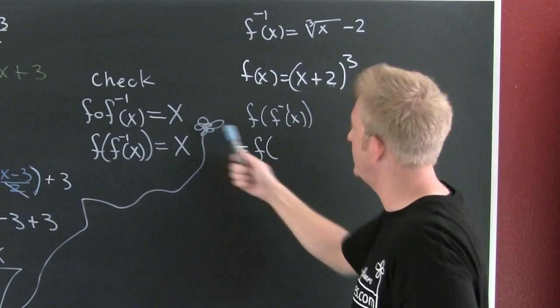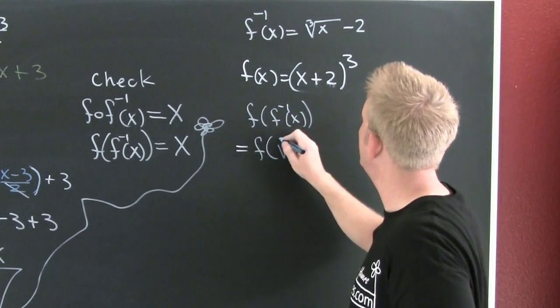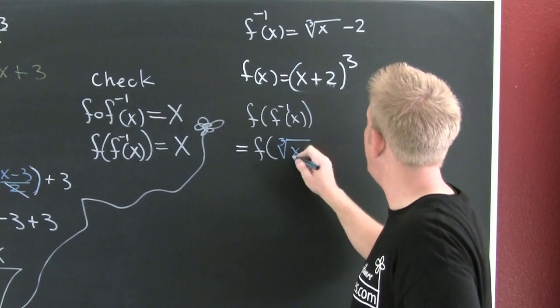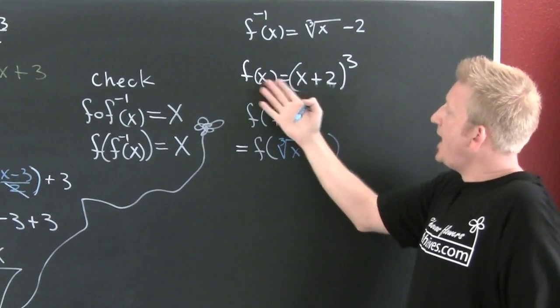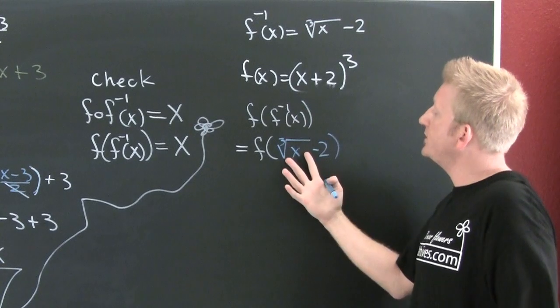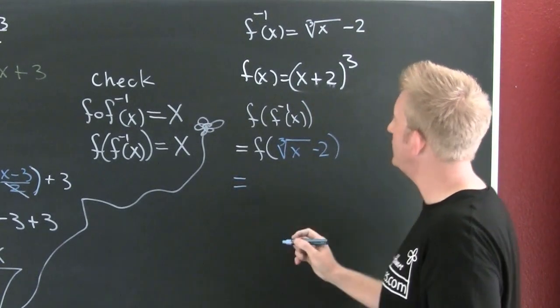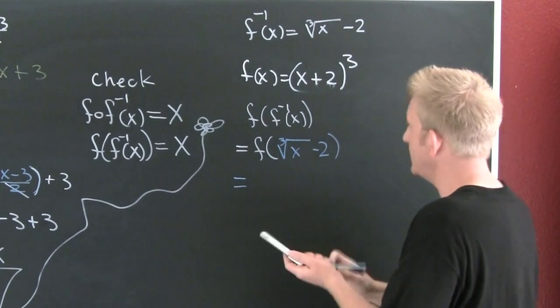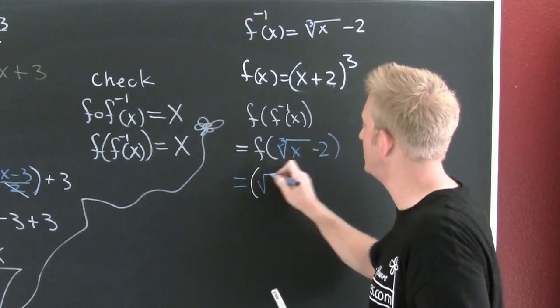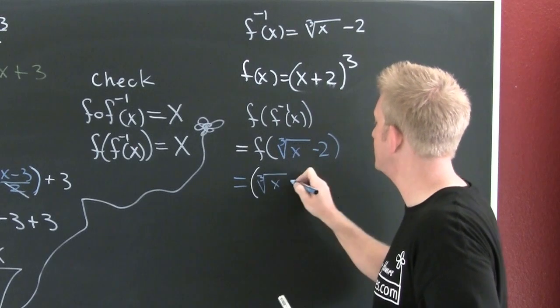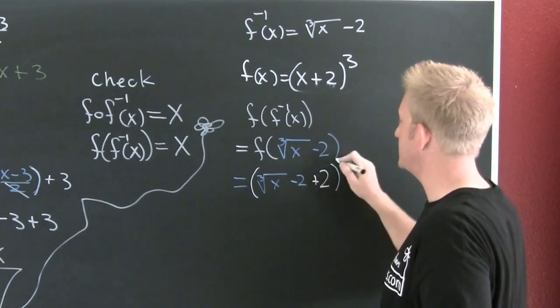the third root of x minus 2. f of an x, I see an x, I'm going to put the third root of x minus 2. And here we go. So, this is going to be the third root of x minus 2, plus 2 to the third.